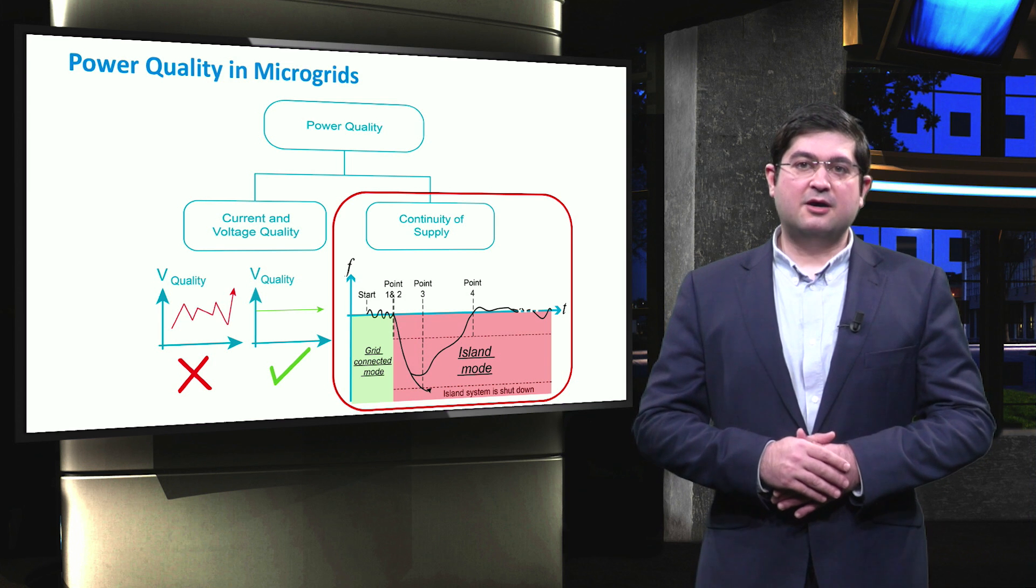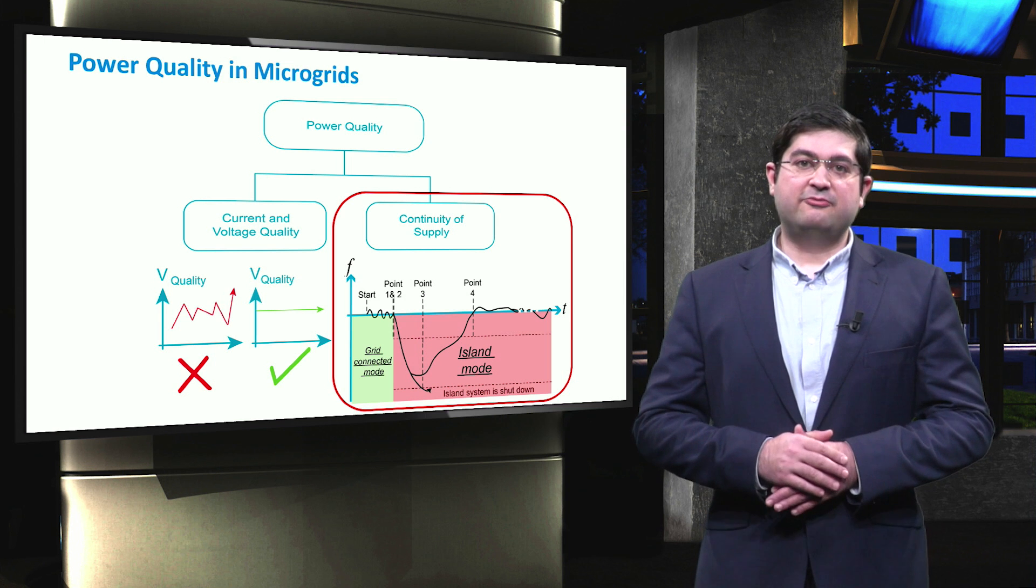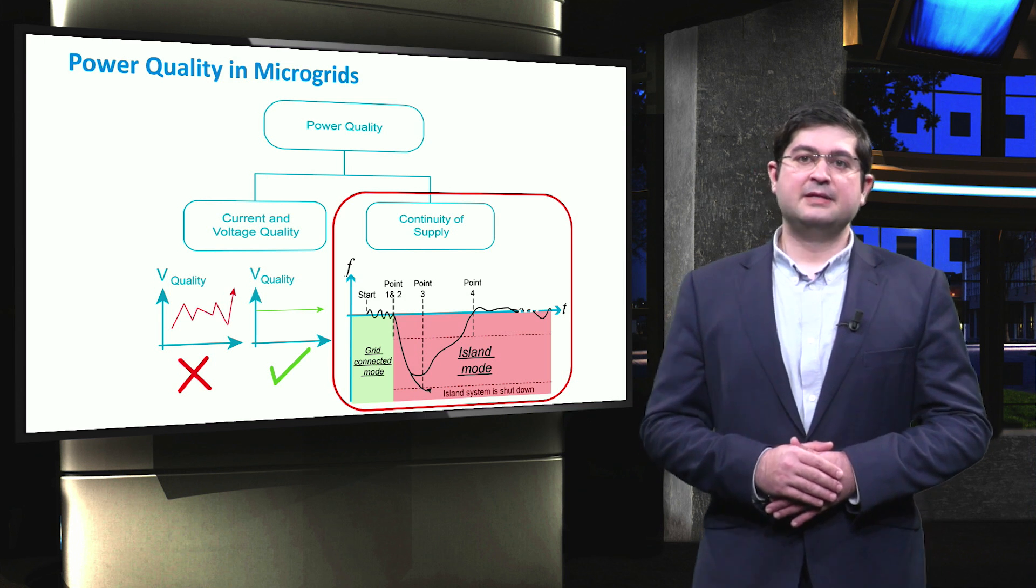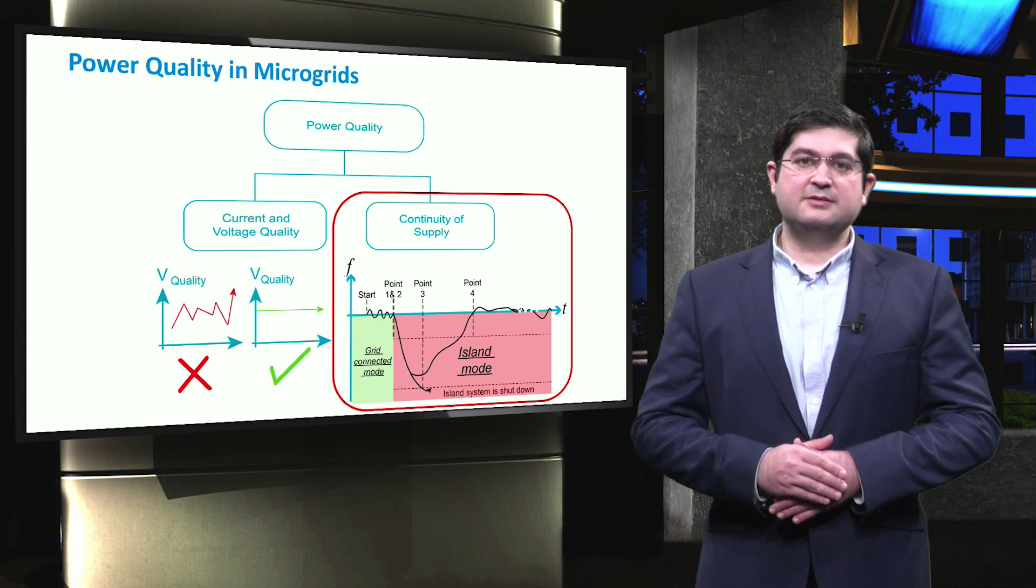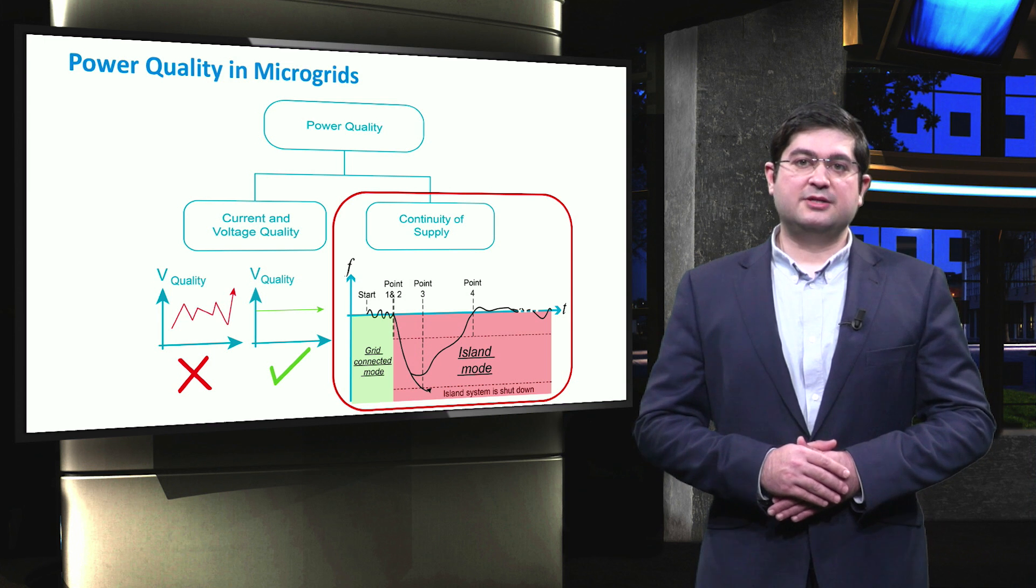The interruptions might occur due to congestions, lack of investments, faults, and high-length resistance of conductors. Thanks to the islanded operation capabilities of microgrids, they are expected to increase the continuity of supply in future distribution networks.